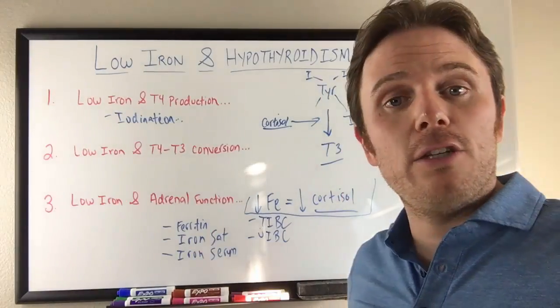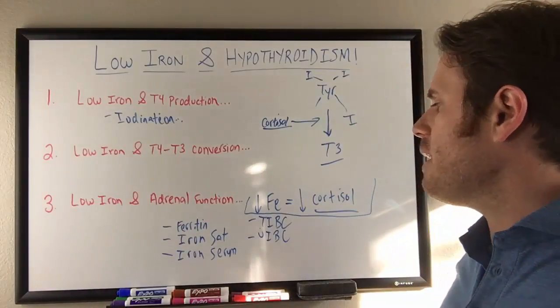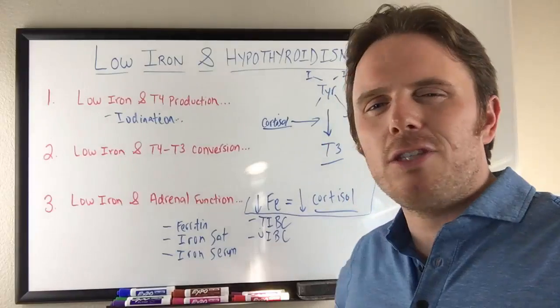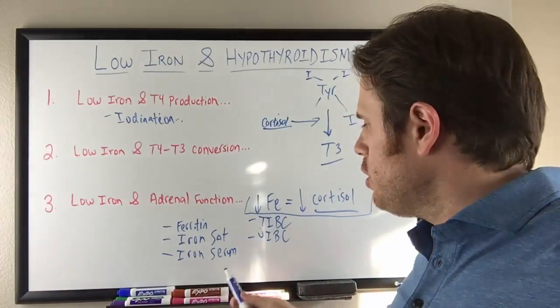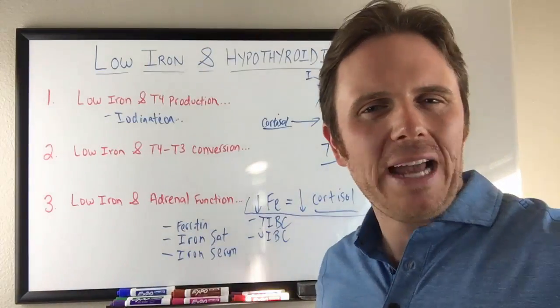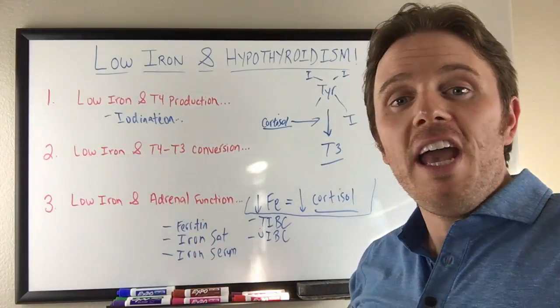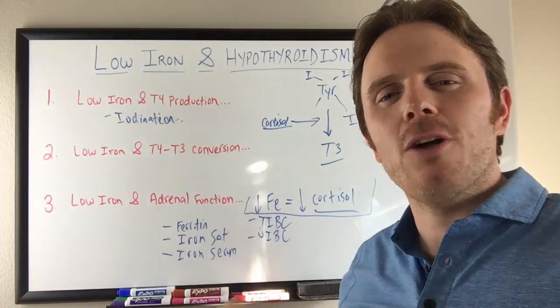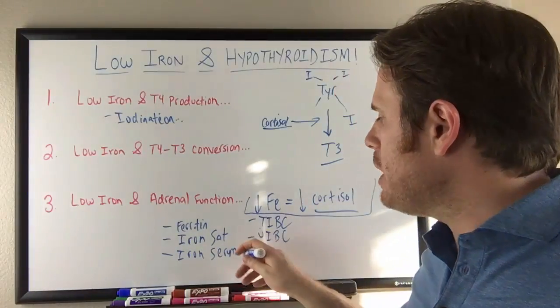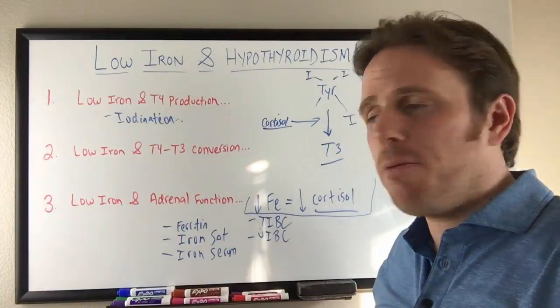So below 30 I consider to be an issue. Iron saturation below 25 I consider to be an issue. And typically iron serum isn't really that big of a deal. It's typically around 40 to 80 on average. You can have normal iron serum though and have these other things out of whack. So it's good to look at iron serum. Sometimes we'll see that high and these can be low and we'll see increase in inflammation. So it's good to look at iron serum, but it's not the be all or end all. Most people only focus on that. And these are your real good, your more complete advanced iron panel.